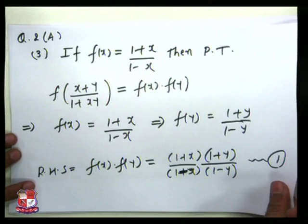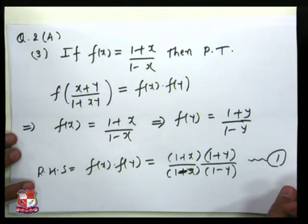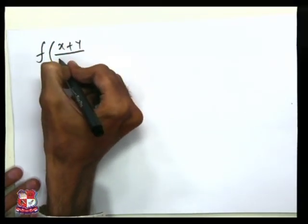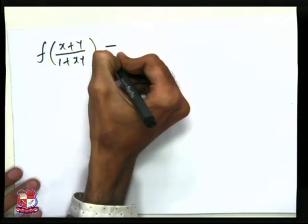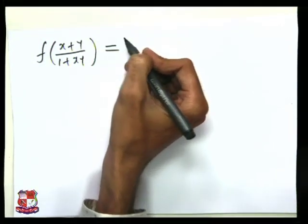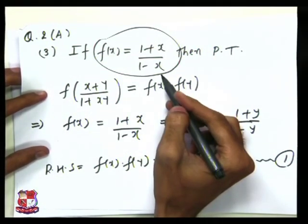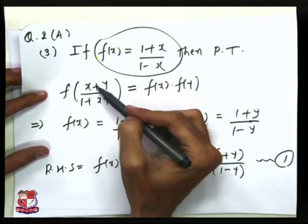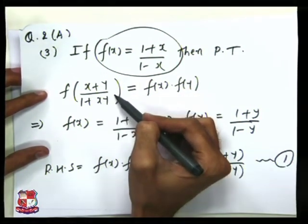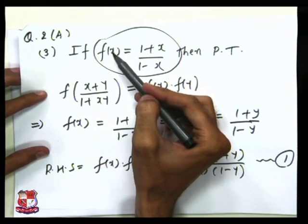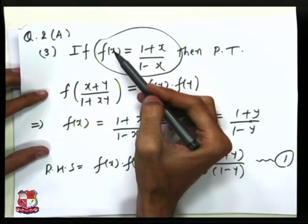Now let us try to find the left hand side, which is f((x+y)/(1+xy)). By the definition f(x) = (1+x)/(1-x), when we find f((x+y)/(1+xy)), we will put (x+y)/(1+xy) in place of x.